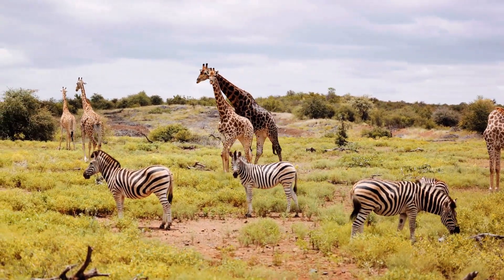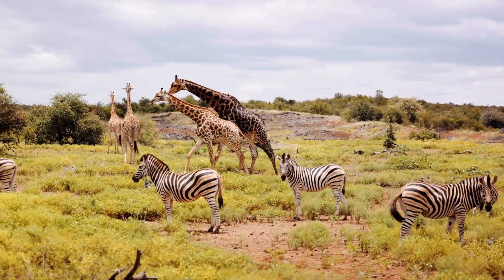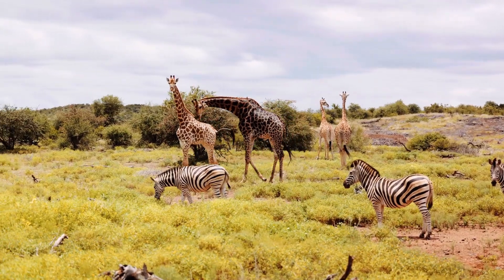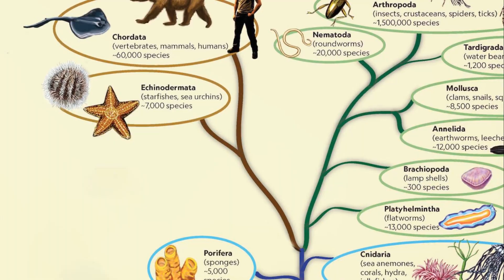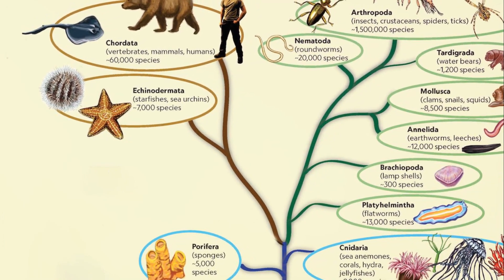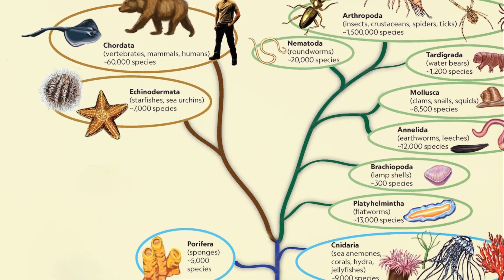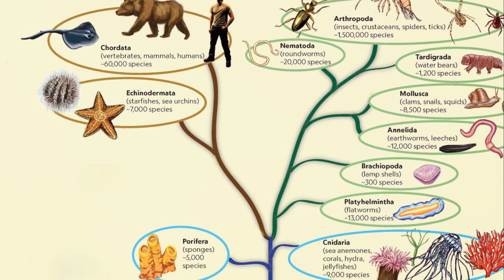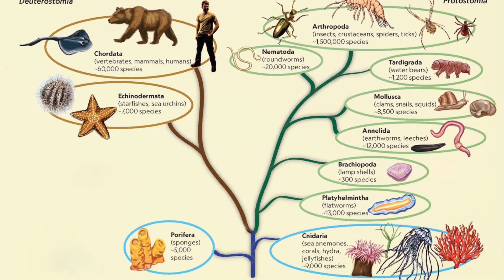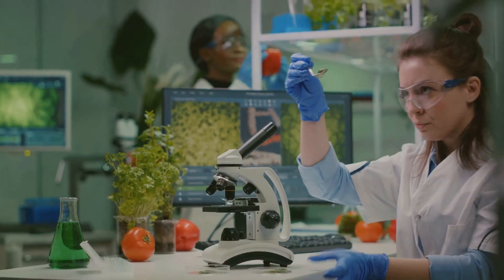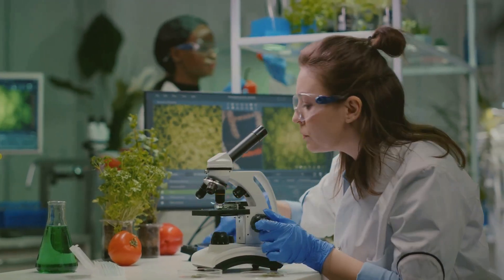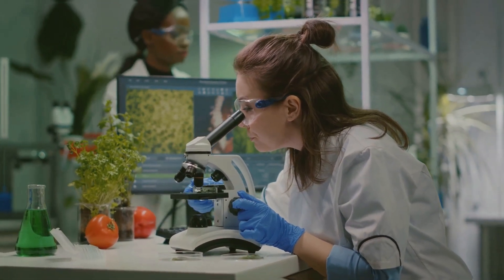Yet with such an overwhelming diversity, how do we humans make sense of it all? The answer lies in the science of taxonomy, the classification of living organisms. Picture a giant tree of life where every branch, every twig and every leaf represents a different species. Now imagine trying to navigate through this vast flora without a map — daunting, isn't it? This is where taxonomy steps in, providing us with a detailed roadmap, a hierarchical system that classifies organisms from broad categories to specific ones.